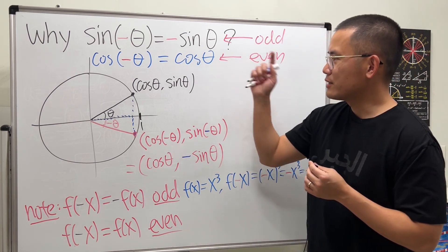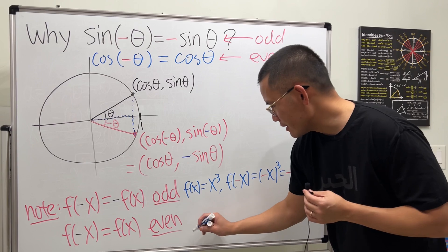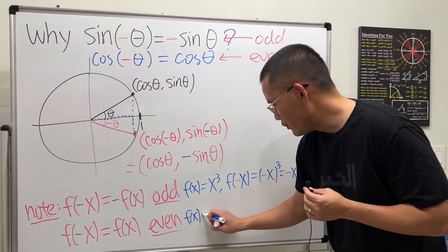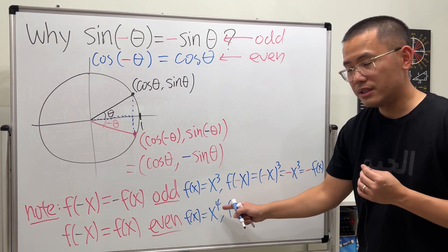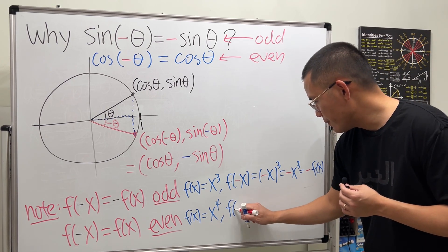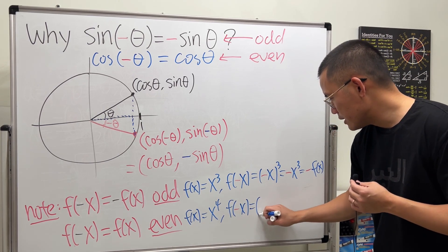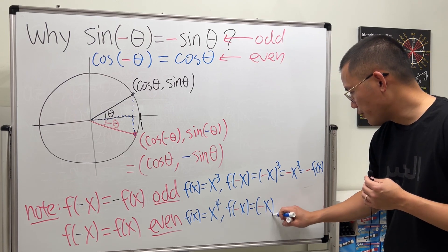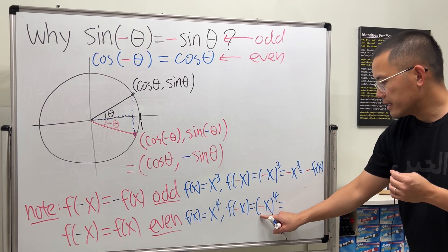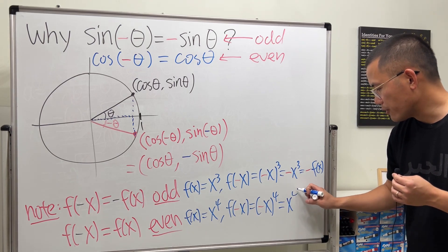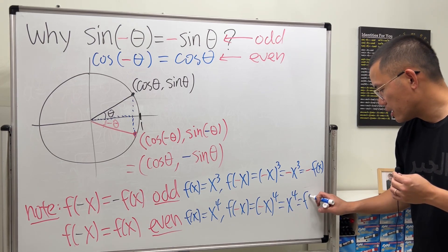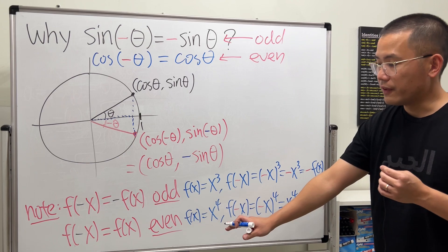And for even function, that's just cosine, I'll give you another example. Let's say if you have x to the fourth power, it's even because not only the even power, but really, when you do this, negative x to the fourth power, negative 1 to the fourth power is just 1, so you get the original function back.